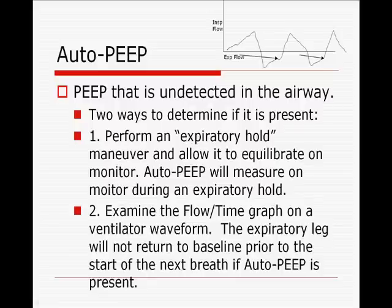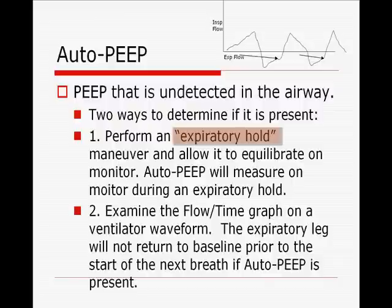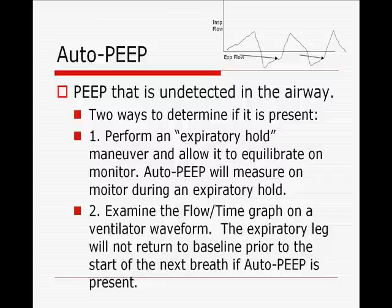Auto-PEEP, or intrinsic PEEP, is basically PEEP that's undetected in the airway. You need to be aware of how to determine auto-PEEP while someone is on a ventilator. One maneuver is an expiratory hold — this allows the pressure to equilibrate in the airway, and you would actually see the baseline pressure increase on the manometer. For example, if you did an expiratory hold and the patient was on a PEEP of 5, you might see the PEEP go up to 8 or 9, indicating auto-PEEP. Expiratory hold is one method of detection.